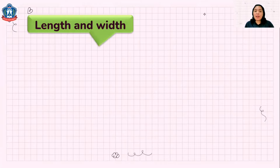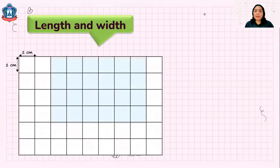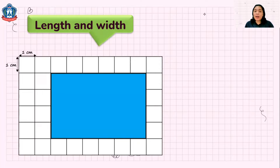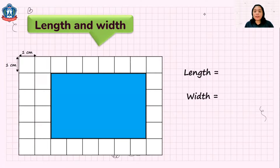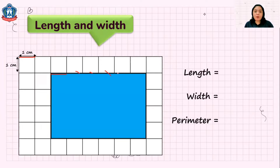Let's review first about length and width. I have here a rectangle and let's try to find the length and width. The length is the longer side of a rectangle. The width is the shorter side. So the length of this rectangle, let's count. Remember that each square here measures 1 centimeter. So this is 1 centimeter. We have 2, 3, 4, 5, 6. So the length of this rectangle is 6 centimeters. And the width measures 1, 2, 3, 4 — 4 centimeters.